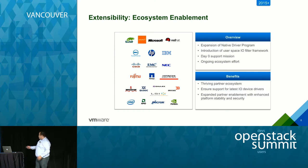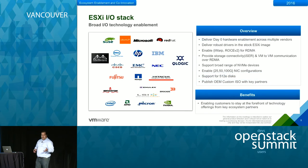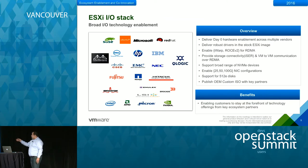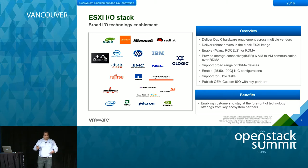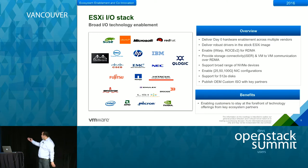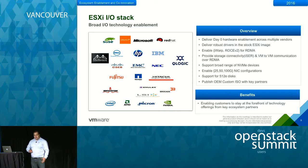This extends to emerging IO stack technologies. For example, 100-gig NICs are in early development, and we're working with those vendors right now to ensure support on vSphere, so when they become commonly available in the market, you just plug them in and they work. That's one of the benefits you get from working with vSphere and the ecosystem.